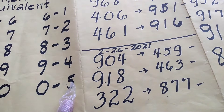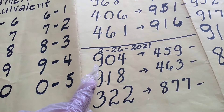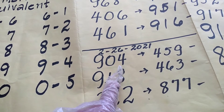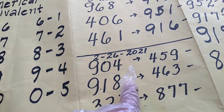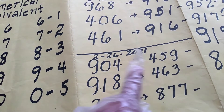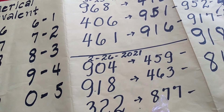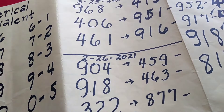So yung probable ko ay ito. Pwede ito lumabas: itong 4, 6, 3. At saka ito. Papalitan ito ng 8, 1, 7.